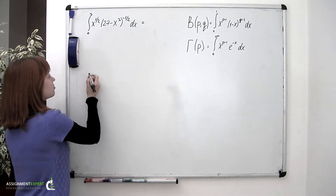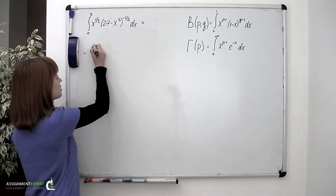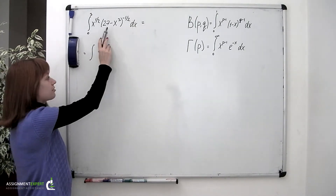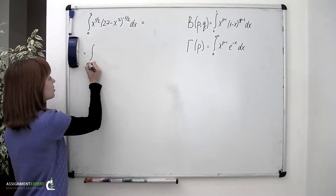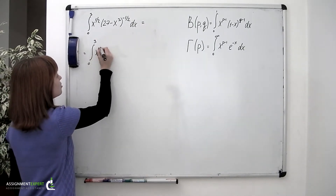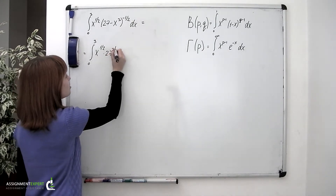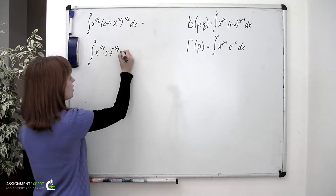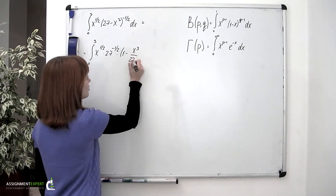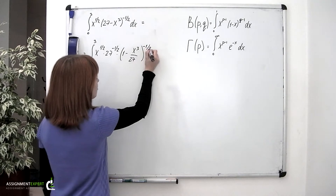First of all, let's see if there's anything we can do with the limits of integration. The first thing to do is factor out 27. So we have the integral from 0 to 3 of x to the one-half times 27 to the negative one-half times (1 minus x cubed over 27) to the negative one-half dx.